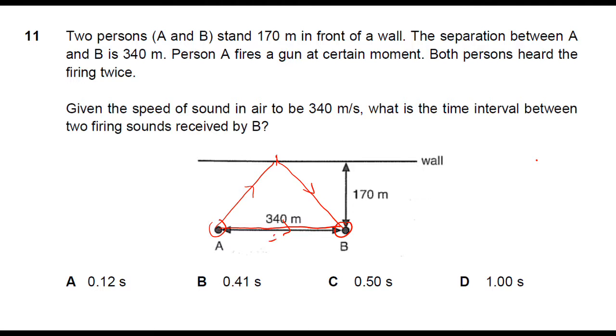So now, let the time for this path be T1 and the second path be T2. Let's find T1 first. Using the simple formula, speed equals distance over time, where the speed is 340 and the distance is 340 divided by T1. If you solve it, the time taken will be one second.